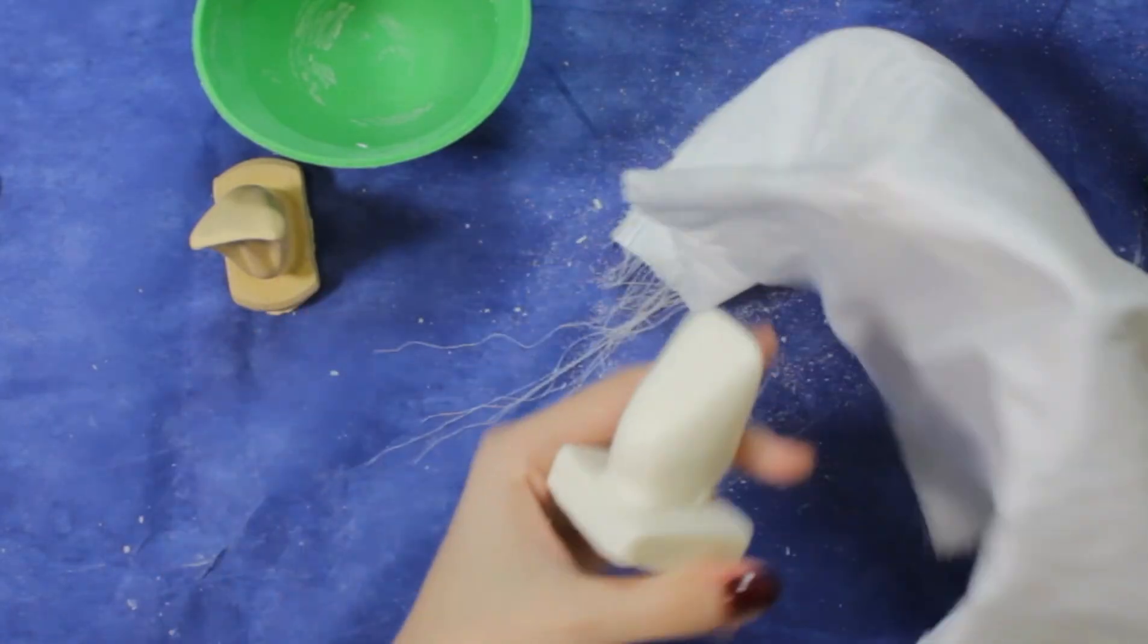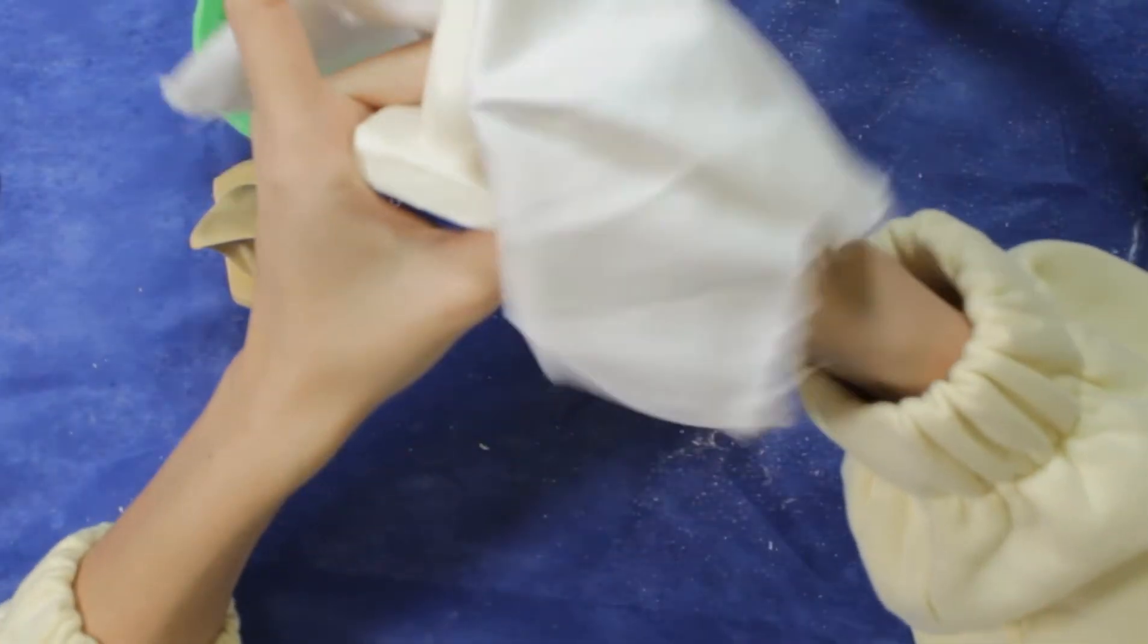Next trick is satin. Rub the tooth slowly with satin, and it will shine bright like a diamond.